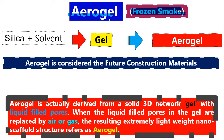Aerogel is considered the future construction material. Nowadays we make buildings using heavy concrete and other materials, but if we make it possible that buildings can be made from aerogel, the buildings will be very light and we will be able to construct them very fast.